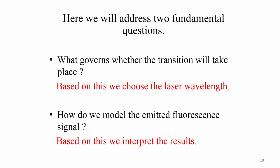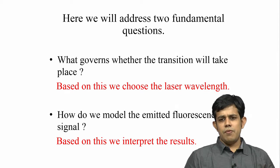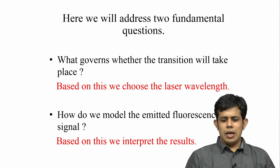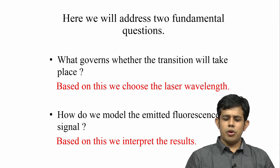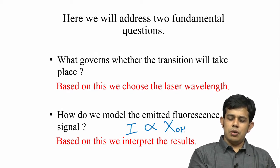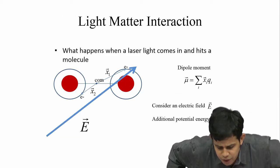Now we need to address two questions. First, what governs whether the transition will take place — that is, how do we choose the laser wavelength, since shining any light will not produce fluorescence. Second, how do we model the emitted fluorescence signal — that is, how do we correlate the intensity of the light to the number density or mole fraction of OH. These are the two most important considerations, and we will take them up in a fundamental manner.